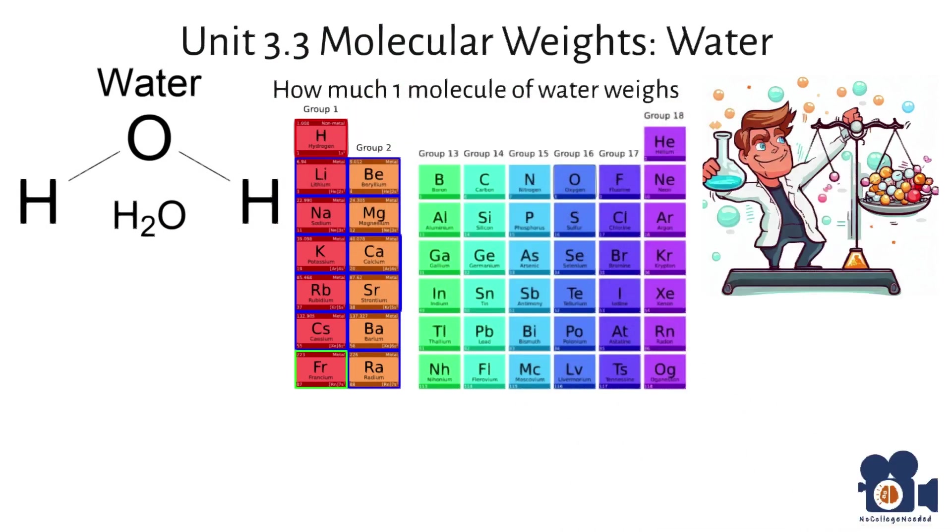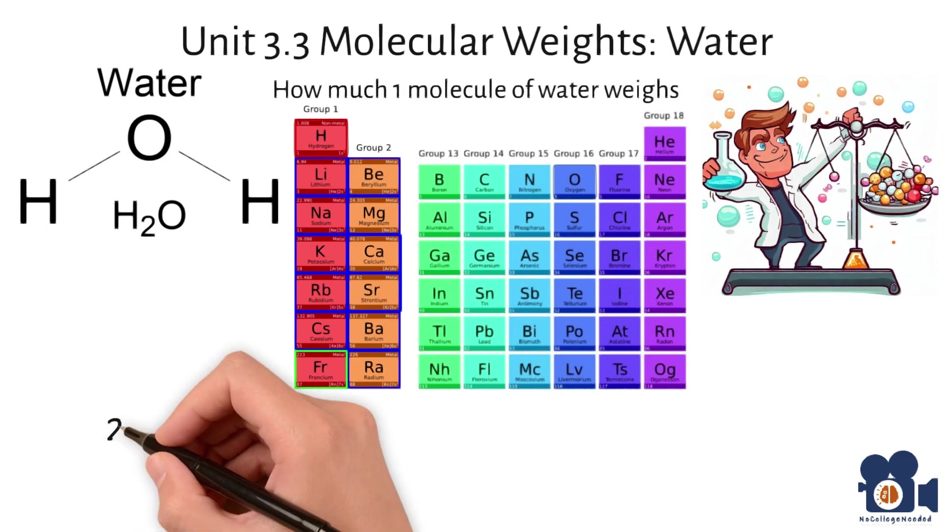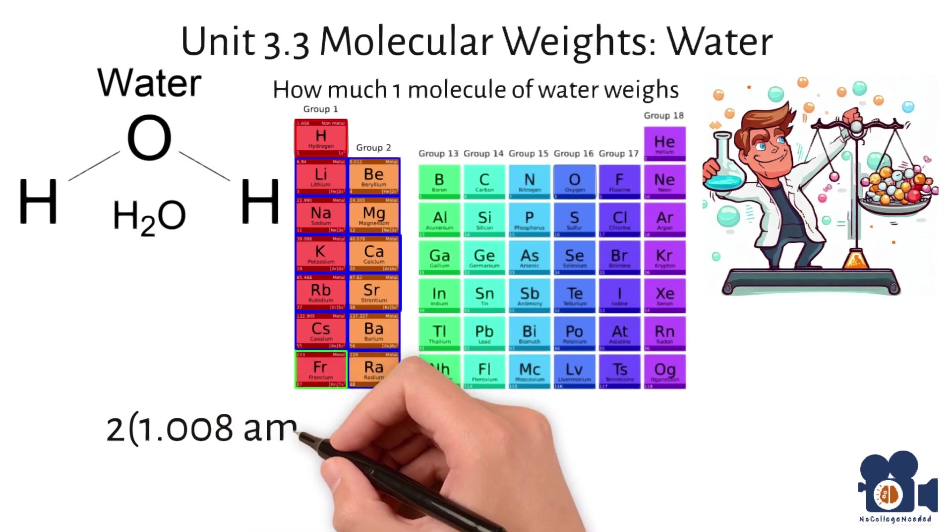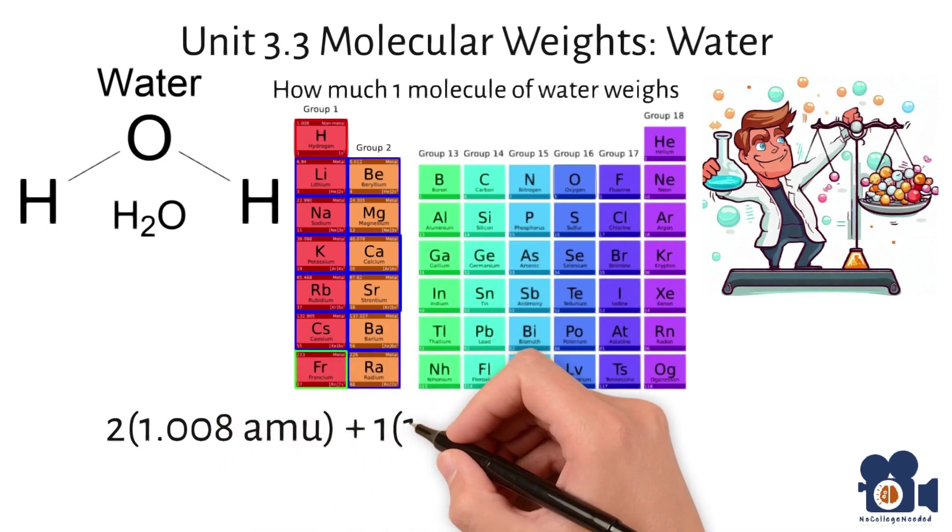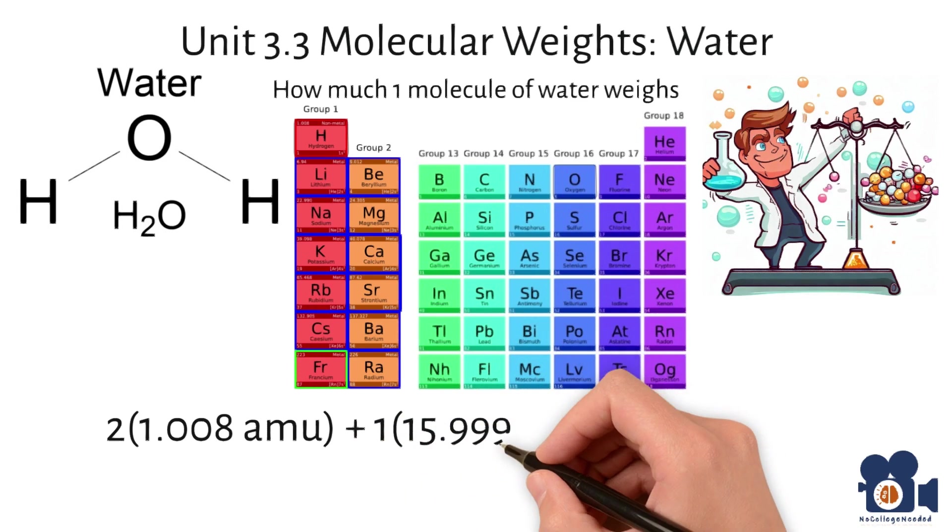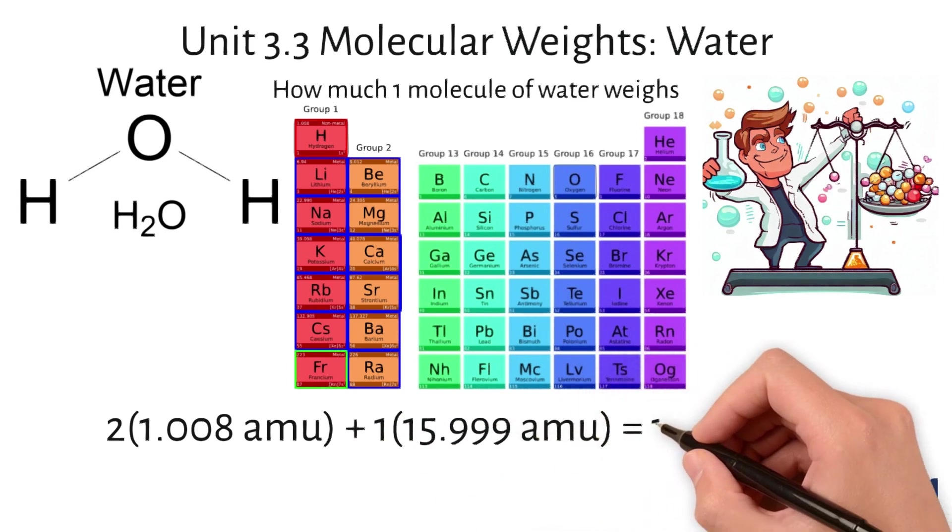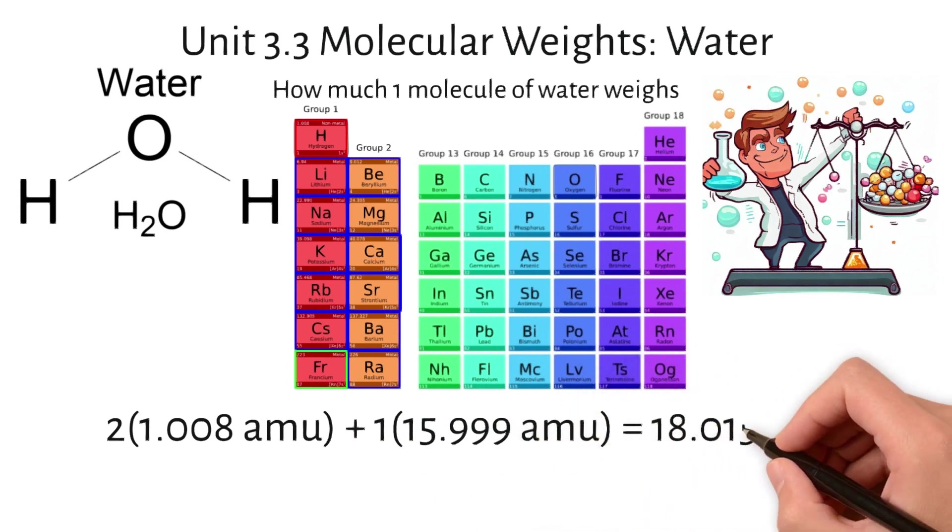Therefore, to calculate the molecular weight of water, we add up the AMUs for the atoms. This looks like 2 times 1.008 AMUs of hydrogen plus 1 times 15.999 AMUs for oxygen to get 18.015 AMUs for water.